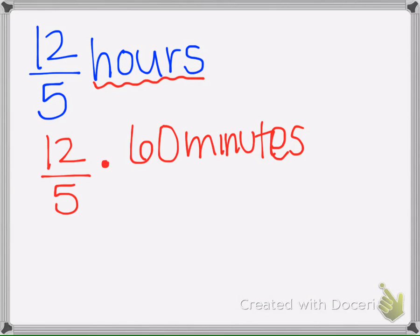So go ahead and do that. And when you do twelve fifths times sixty, your calculator will say two point four. Actually, I take that back. When you do twelve fifths times sixty, your calculator will say a hundred and forty-four, and it's minutes.